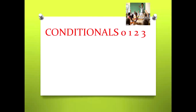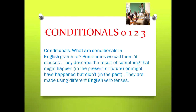First of all, we are going to talk about conditionals: zero, first, second, and third. So I'm going to give you a definition. Conditionals — what are conditionals? In English grammar, sometimes we call them 'if clauses.' They describe the results of something that might happen in the present or future, or might have happened but didn't in the past. They are made using different English verb tenses.